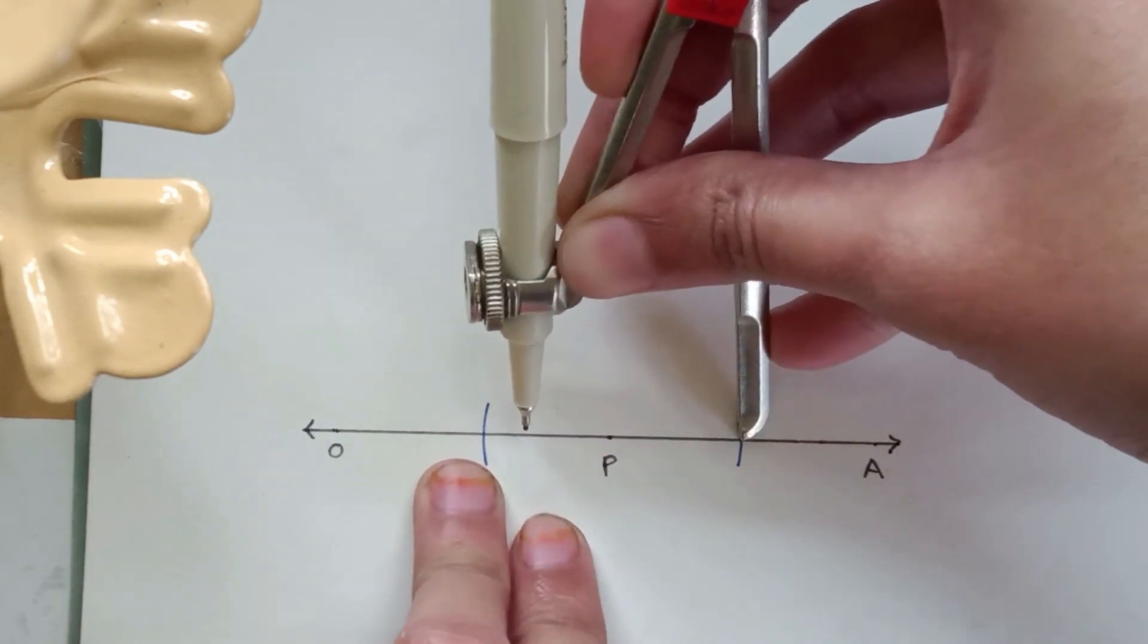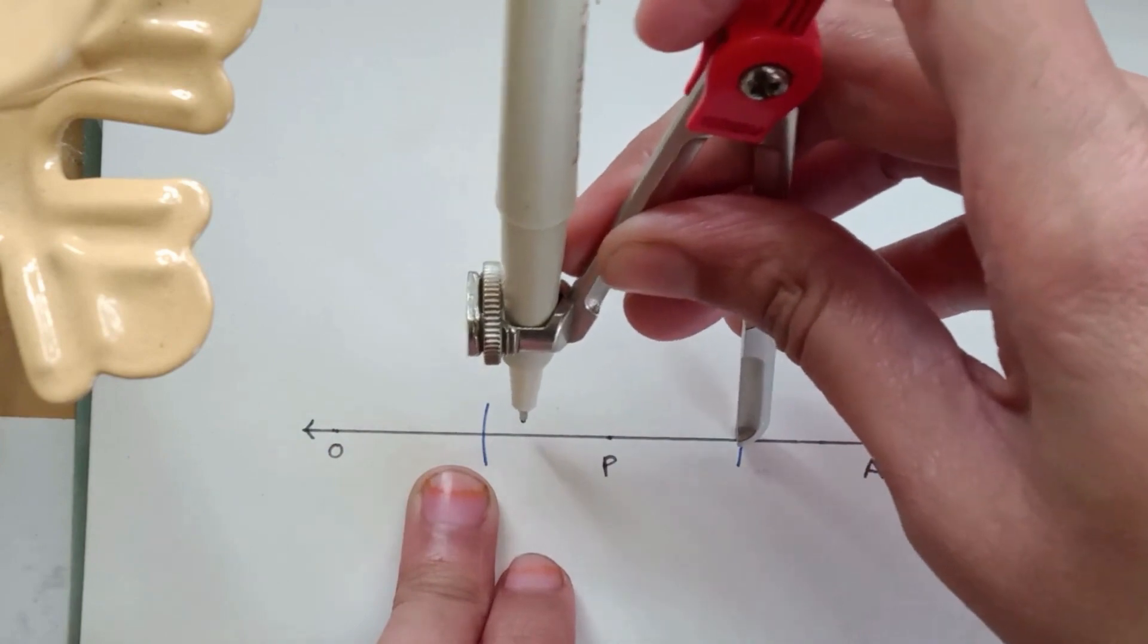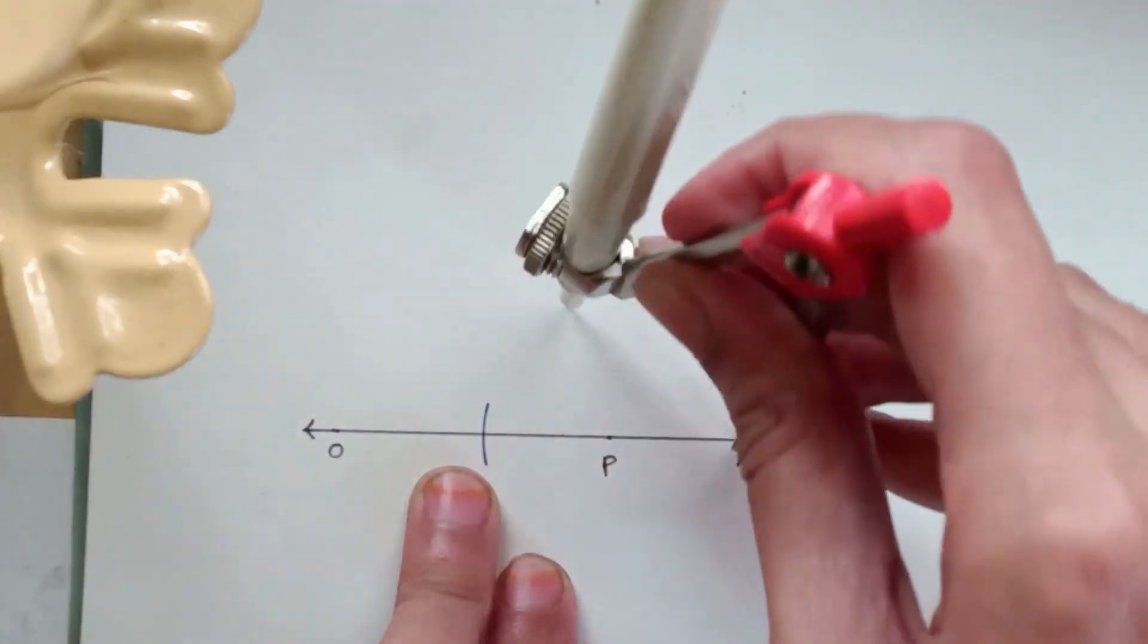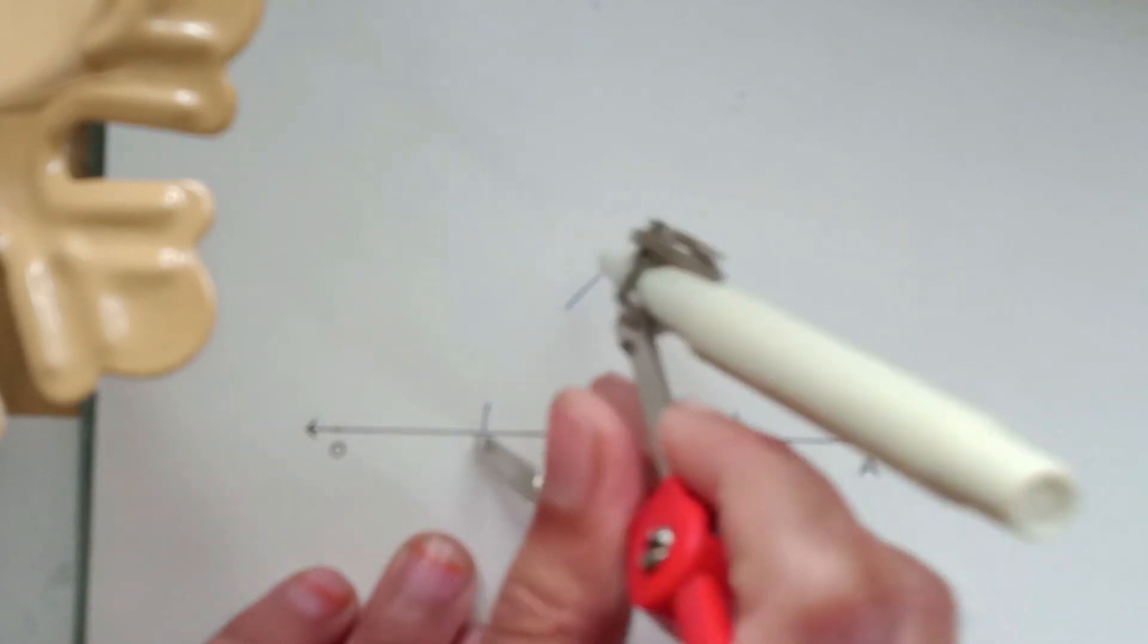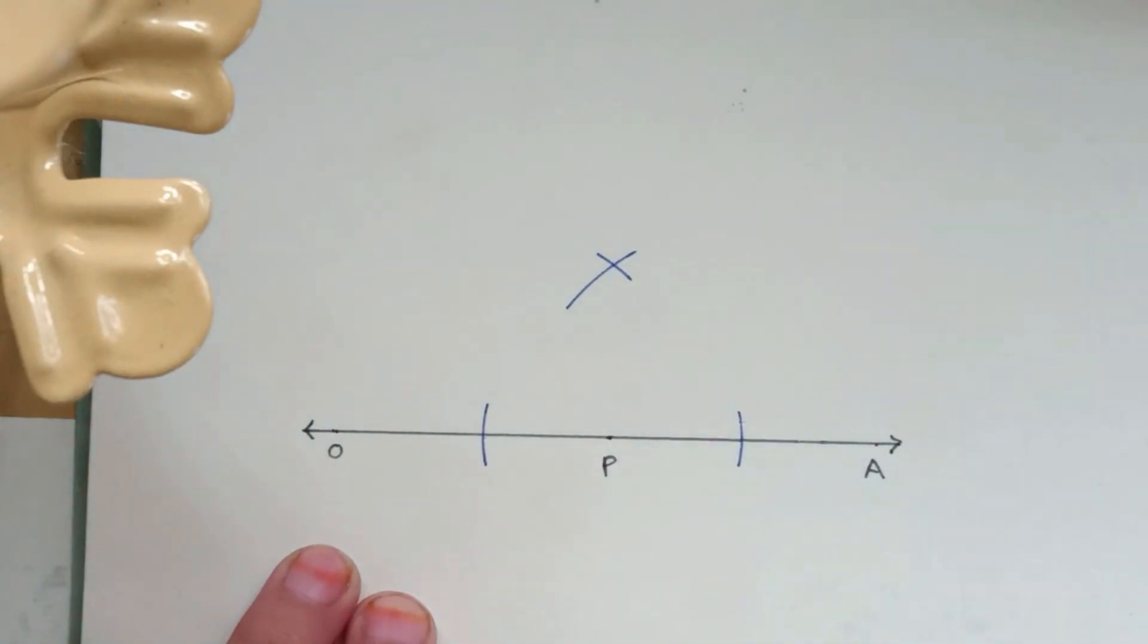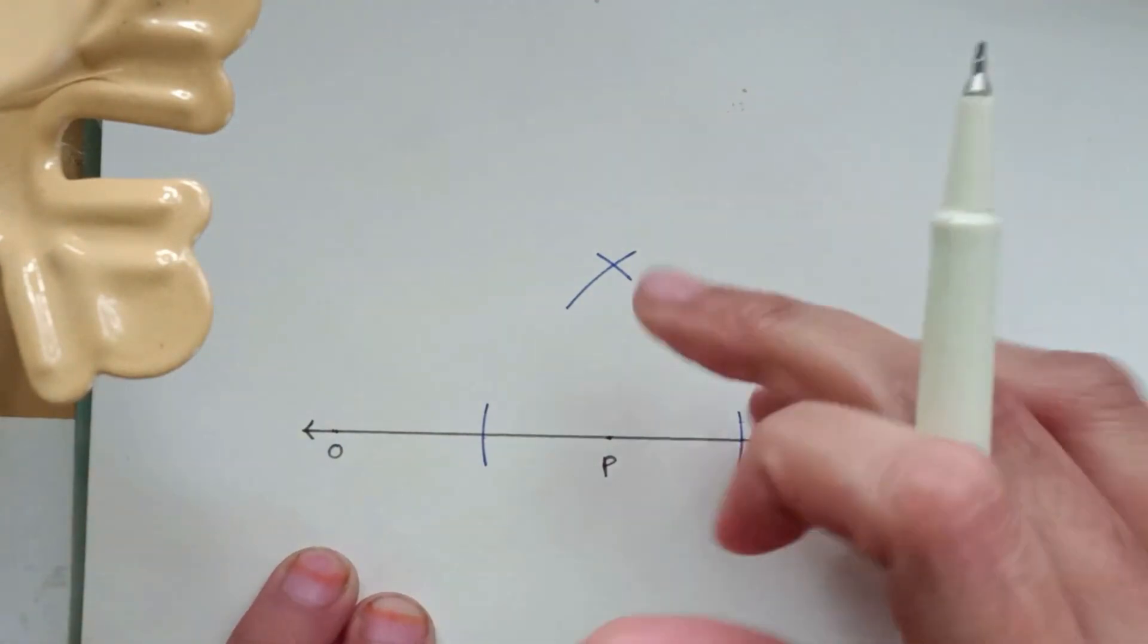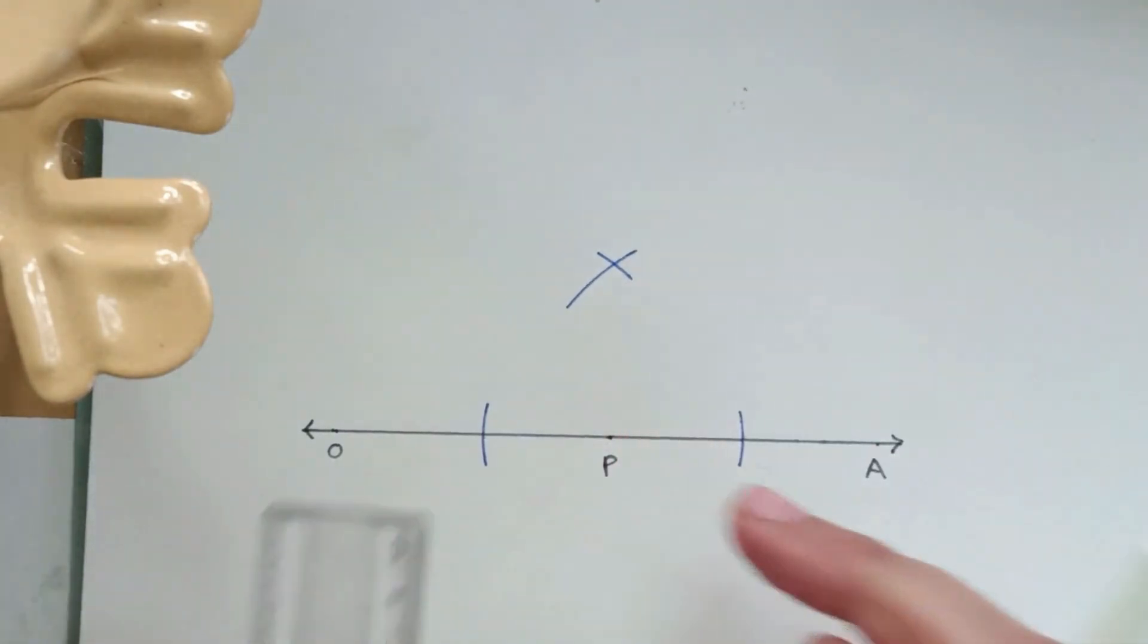So now put the pointer on one of the arcs, take the distance greater than these two, like slightly more than point P. So with this much distance, draw two intersecting arcs from these two points. Okay, now we have to join this newly intersected point with point P.